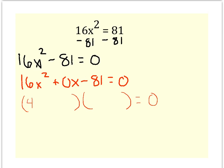The 16x squared will be 4x and 4x. The 81 is 9 and 9, and since it's a difference of squares, remember you need one positive, one negative.